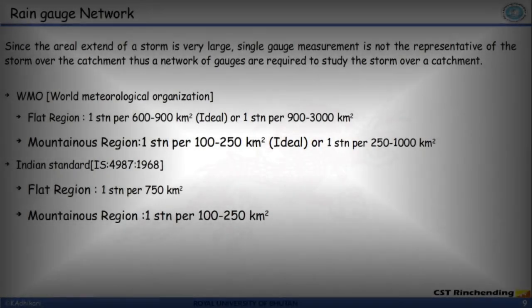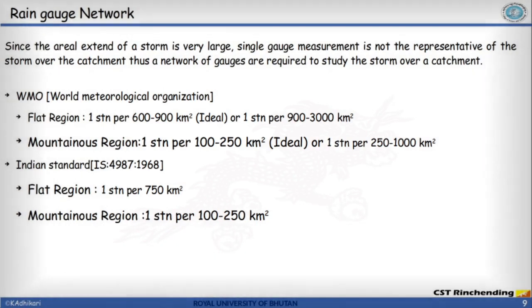Let's continue our discussion on precipitation. In our previous lecture we discussed how to measure precipitation. Today we shall discuss how to prepare and analyze precipitation data. Precipitation data coming from a station is just point data, whereas a storm covers a very large area. Since the aerial extent of a storm is very large, a single gauge measurement is not representative of the storm over the entire catchment. Thus a network of gauges is required to study the storm over the catchment.